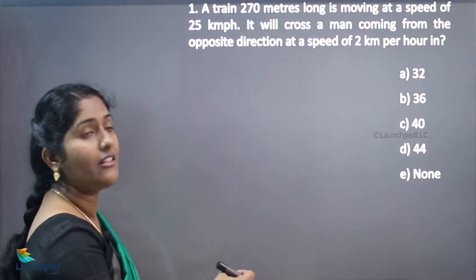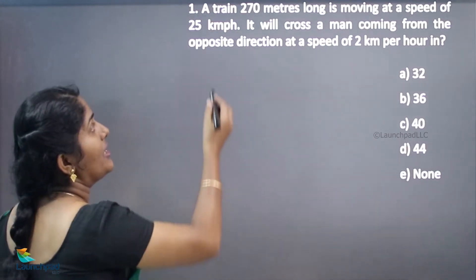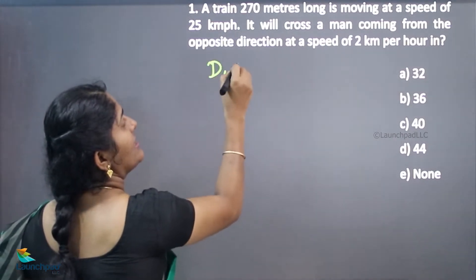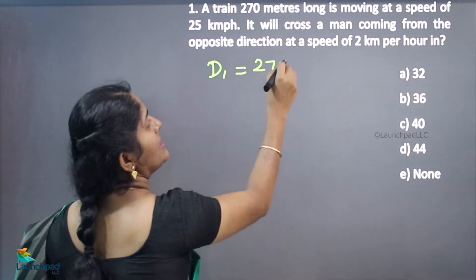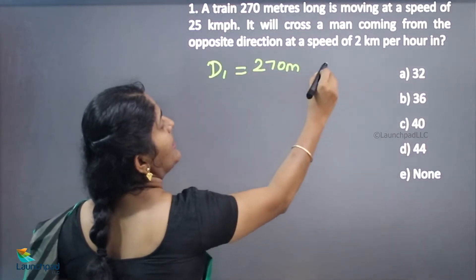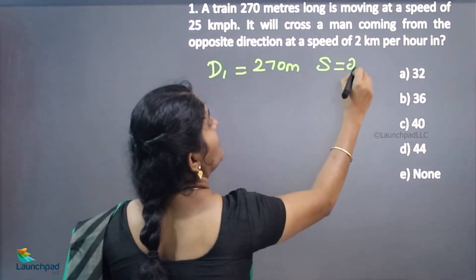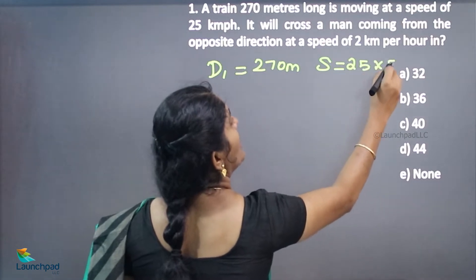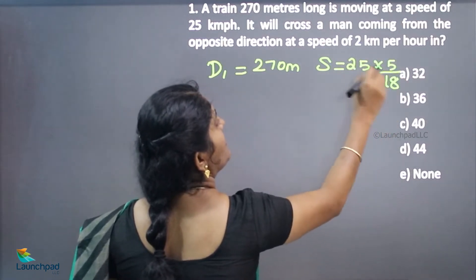The man is also running in the opposite direction. The distance of the train is 270 meters and the speed of the train is 25 kilometers per hour. We should convert this into meters per second.